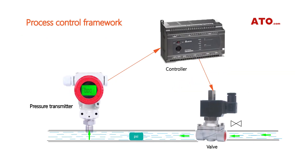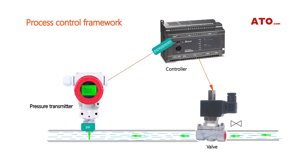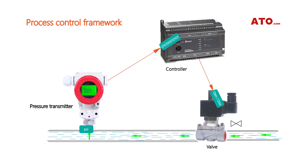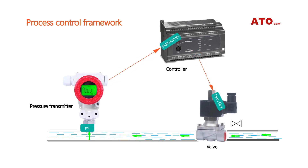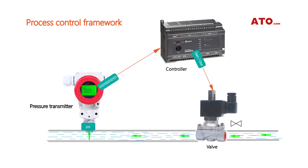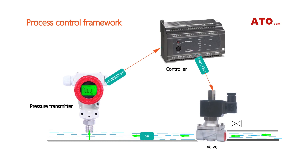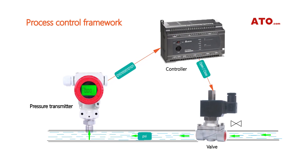In the pipeline pressure transmission system, the pressure transmitter directly converts the pipeline pressure into a digital signal to communicate with the PLC through the Modbus protocol. The PLC judges whether to control the valve by analyzing the digital signal, achieving the purpose of controlling pipeline flow.